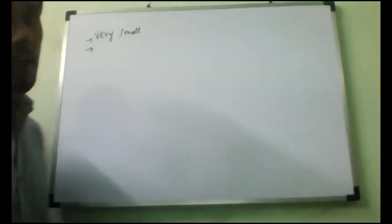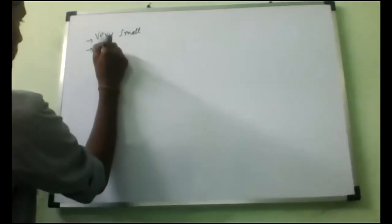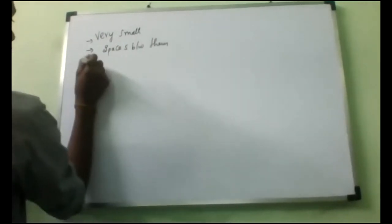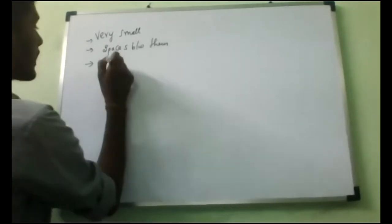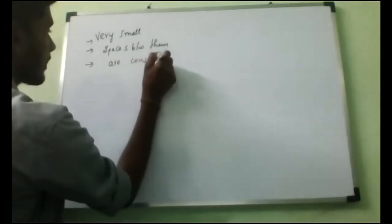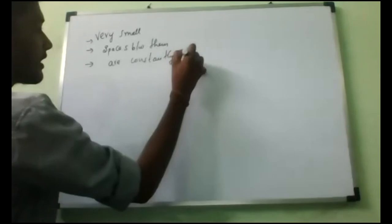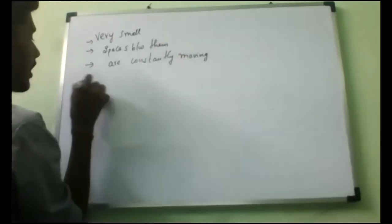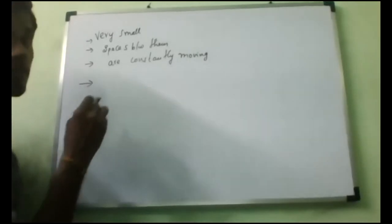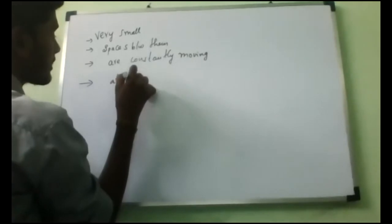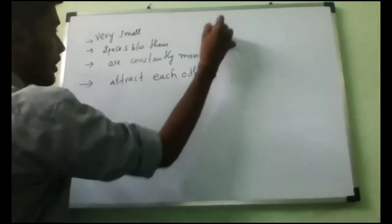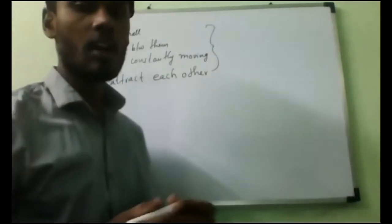The second characteristic is that the particles of matter have spaces between them. The third is that they are always constantly moving. And the fourth characteristic is that particles of matter attract each other. So these are the four characteristics of matter which we have studied in the last class.